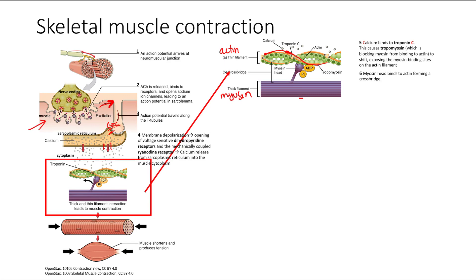Before that can happen, there's this orange band called tropomyosin. Tropomyosin functions as a blocker — it blocks myosin from binding to actin, essentially holding that spot so myosin can't bind.